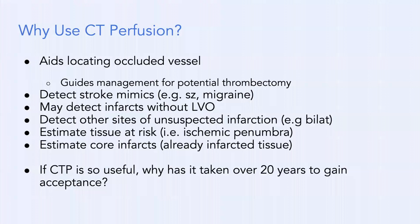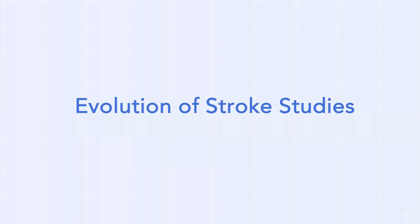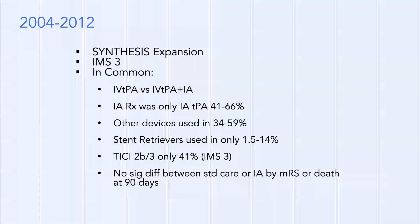If CTP is so useful, why has it taken over 20 years to gain widespread acceptance? Part of it was we didn't have good treatment for LVO. From 2004 to 2012, multiple studies showed no benefit to intra-arterial therapy versus IV therapy — including Synthesis Expansion and IMS3. Back then, intra-arterial therapy used IA tPA only 41–66% of the time, and stent retrievers were used less than 14% of the time, yielding TICI 2b/3 results of only 41%.